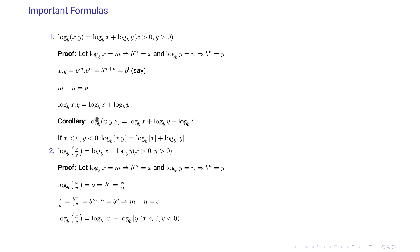A corollary extends this to any number of factors: the log of a product equals the sum of the individual logarithms with the same base. If x and y are less than 0, the result uses the modulus of x and modulus of y. Similarly, log of (x divided by y) with base b equals log of x with base b minus log of y with base b, where x and y are greater than 0; for negative values we again use modulus.